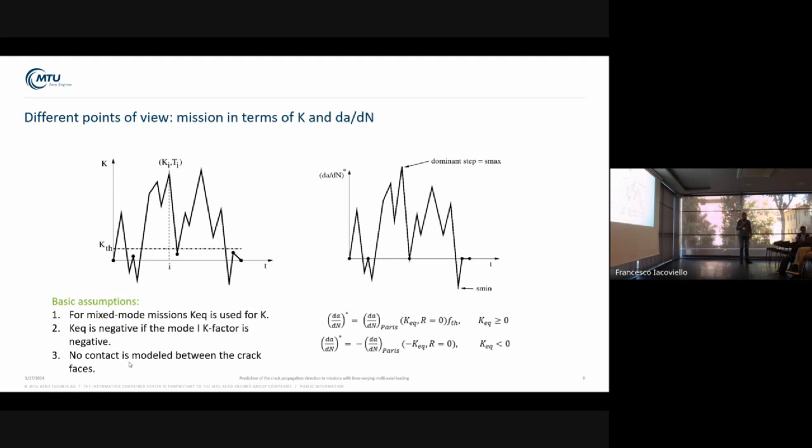We do that because temperatures change all the time. If you're just looking at the K factor, you don't include this temperature influence. A cycle with a low K at very high temperature may be more damaging than a cycle with high K and low temperature. Therefore, we include the effect of temperature by looking at dA/dN star, which in the positive range includes the Paris law and threshold. In the negative range, there's the Paris law.